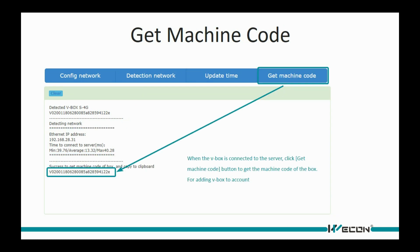When the VBOX is connected to the server, click 'Get Machine Code' to get the machine ID for adding the device to our account.